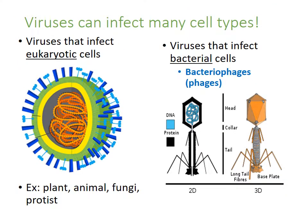Viruses can infect many different cell types, including both eukaryotic and prokaryotic cells. Bacterial viruses are called bacteriophages or sometimes just phages. Eukaryotic viruses can infect plants, animals, fungi, and even protists.